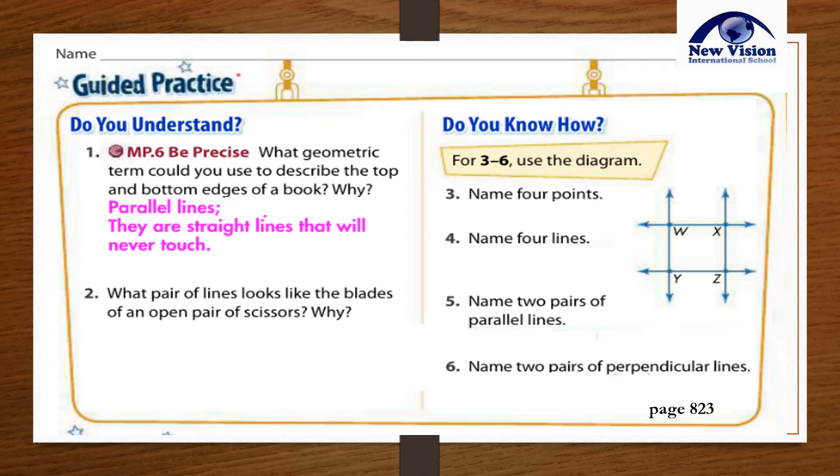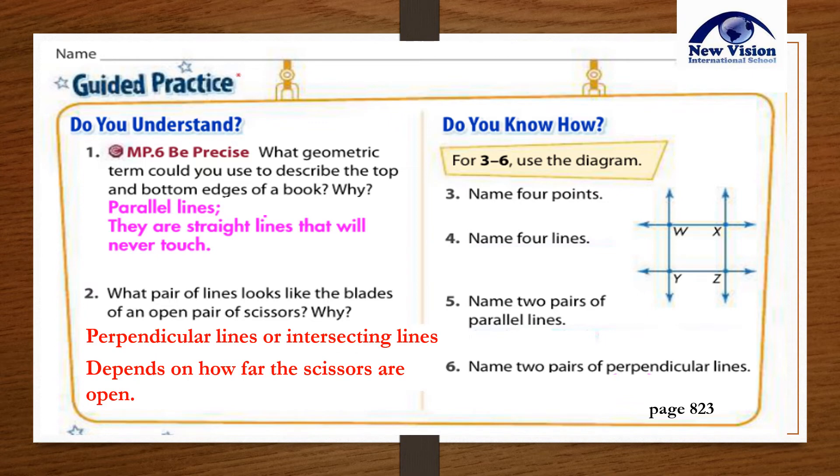Number two: What pair of lines looks like the blades of an open pair of scissors? Why? Perpendicular lines or intersecting lines. It depends on how far the scissors are open. Always remember: Perpendicular lines are lines that intersect to form right angles, while intersecting lines pass through the same point.